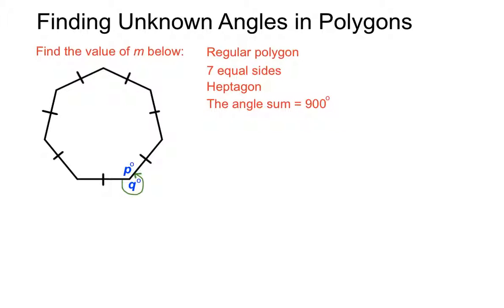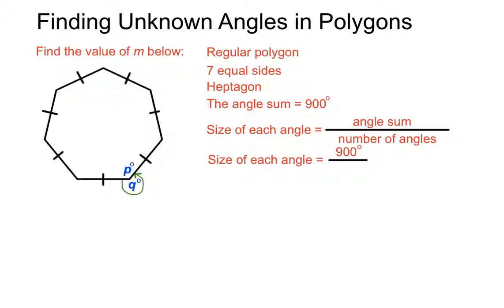To find the value of p, to find the value of each interior angle, we'll divide by how many sides it's got. The size of each angle is the angle sum, which in this case is 900 degrees, divided by the seven sides. We'll get 128.57 degrees if we rounded it off to two decimal places. We're not always asked for even numbers.